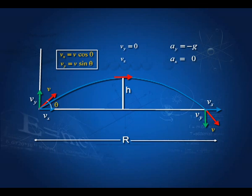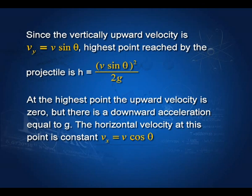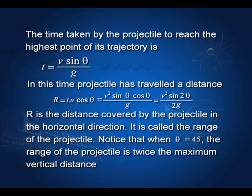The vertically upward velocity is vy equal to v sin θ. The highest point reached is v sin θ squared divided by 2g. At the highest point, the upward velocity is zero but there is a downward acceleration equal to g. The horizontal velocity at this point remains constant. The time taken by the projectile to reach the highest point is t equal to v sin θ divided by g. The horizontal range is v squared sin 2θ divided by 2g. If θ is 45 degrees, the range is maximum.